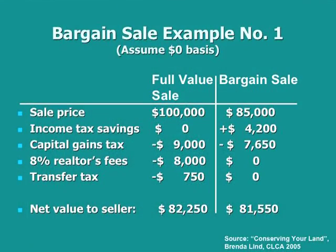Here's an example from the booklet: appraised value of $100,000; they actually sold it for $85,000, so the difference was $15,000 — not perhaps real-world values for the area I work in anymore. It goes through the scenario comparing realtor's fees and the capital gains tax between the two approaches, and you can see that the net value to the landowner really isn't that different.